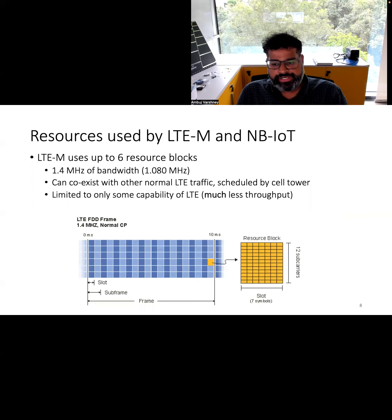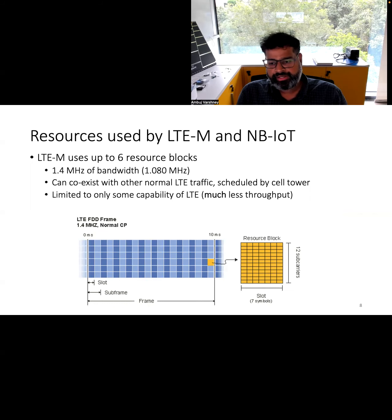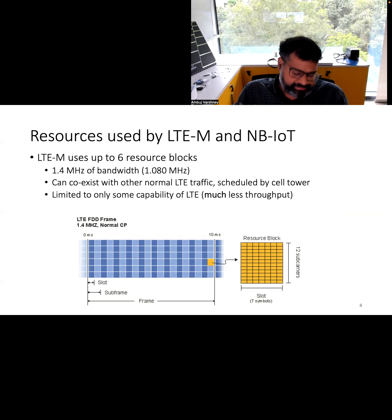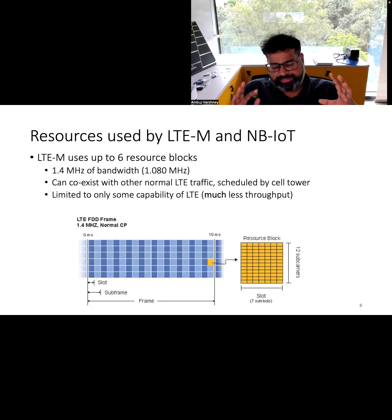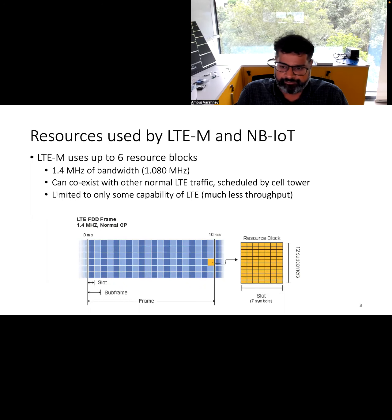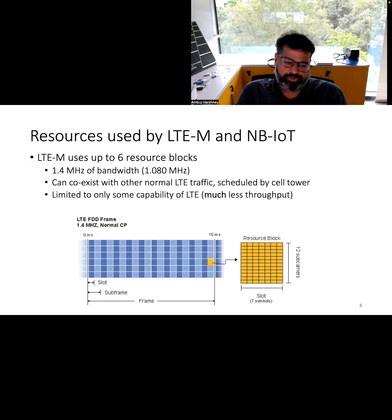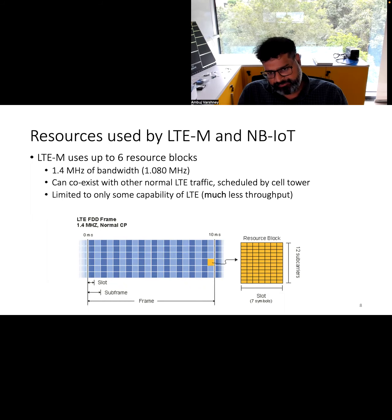LTE-M supports higher data rates than Narrowband IoT and uses six resource blocks, corresponding to about 1.4 MHz of bandwidth. This LTE-M traffic can easily coexist with normal LTE traffic from mobile phones, with the cellular tower scheduling transmissions to ensure IoT device traffic doesn't interfere. However, these standards limit the capabilities of LTE because IoT devices are constrained and don't require all the capabilities LTE offers — so typically only a subset of LTE capabilities is supported for these IoT devices.